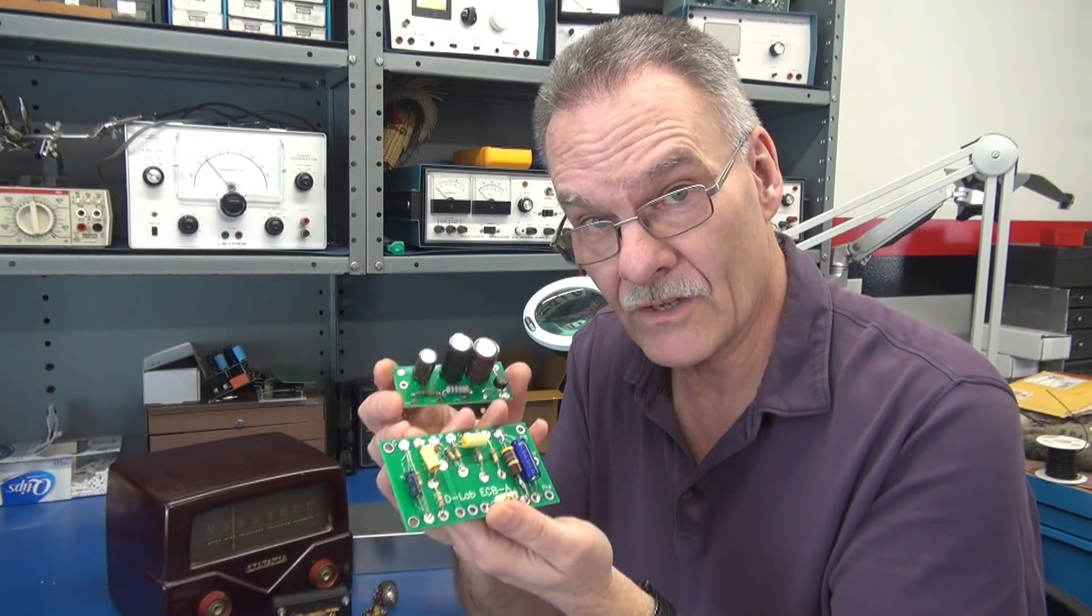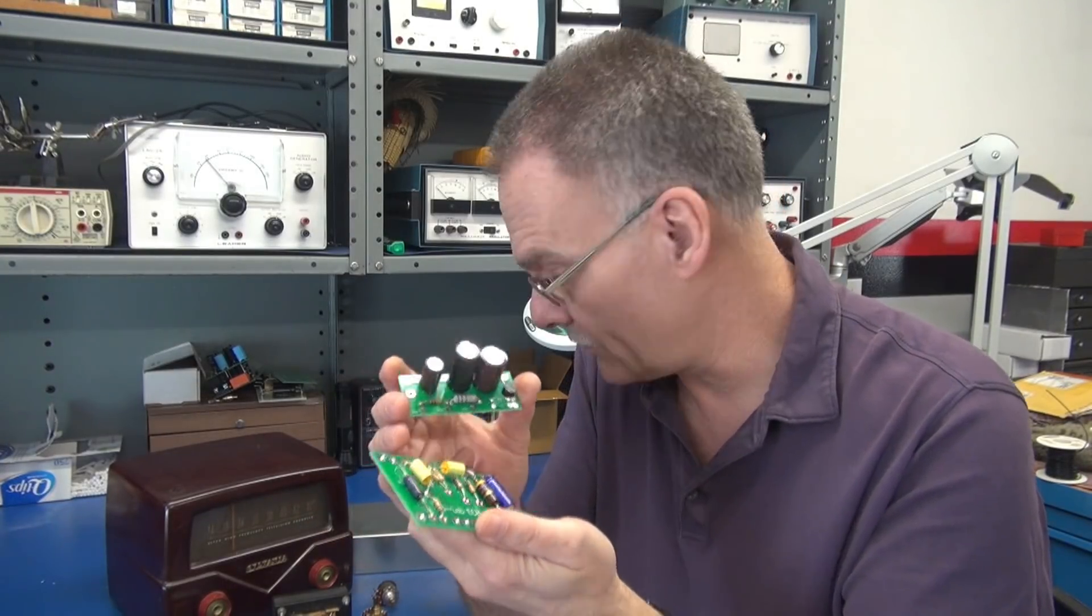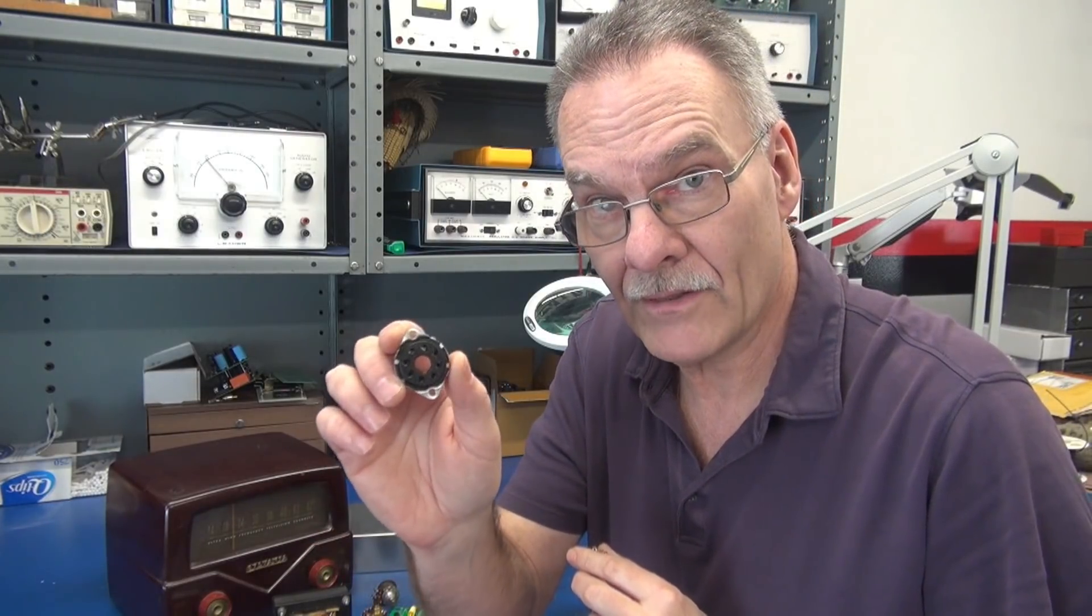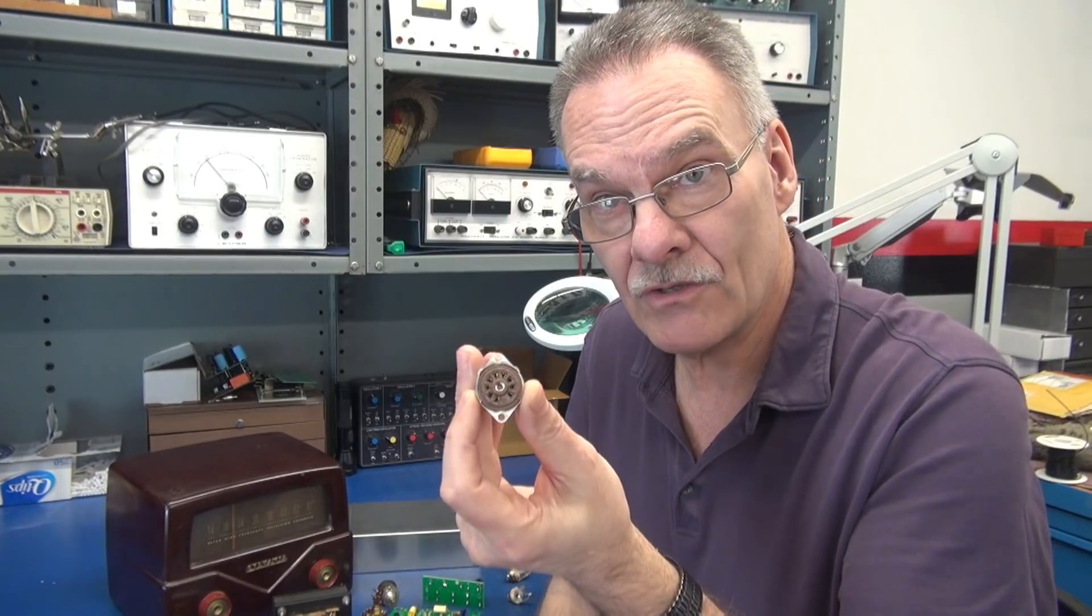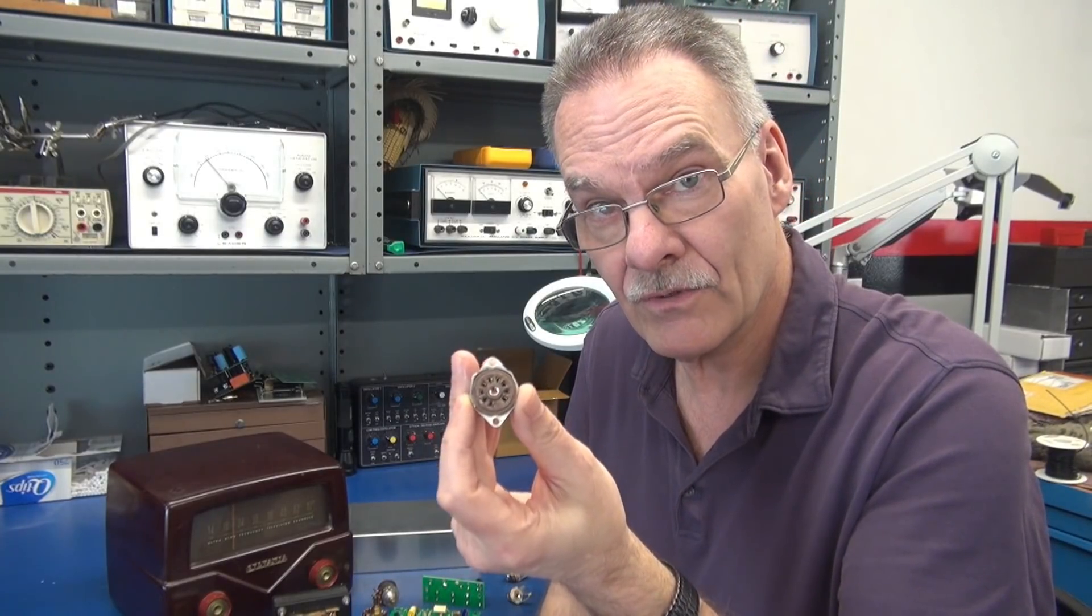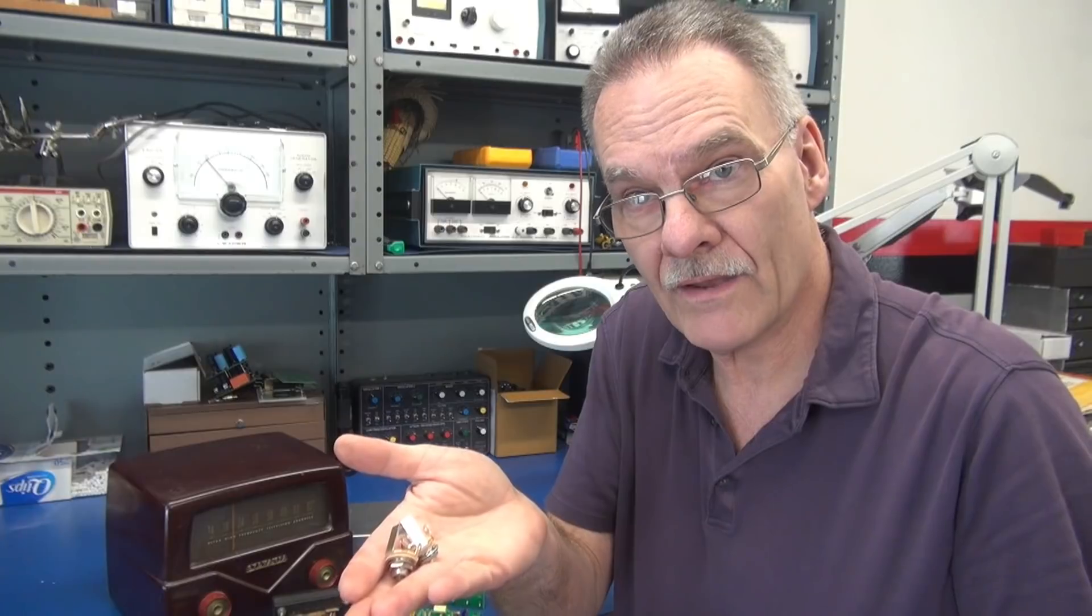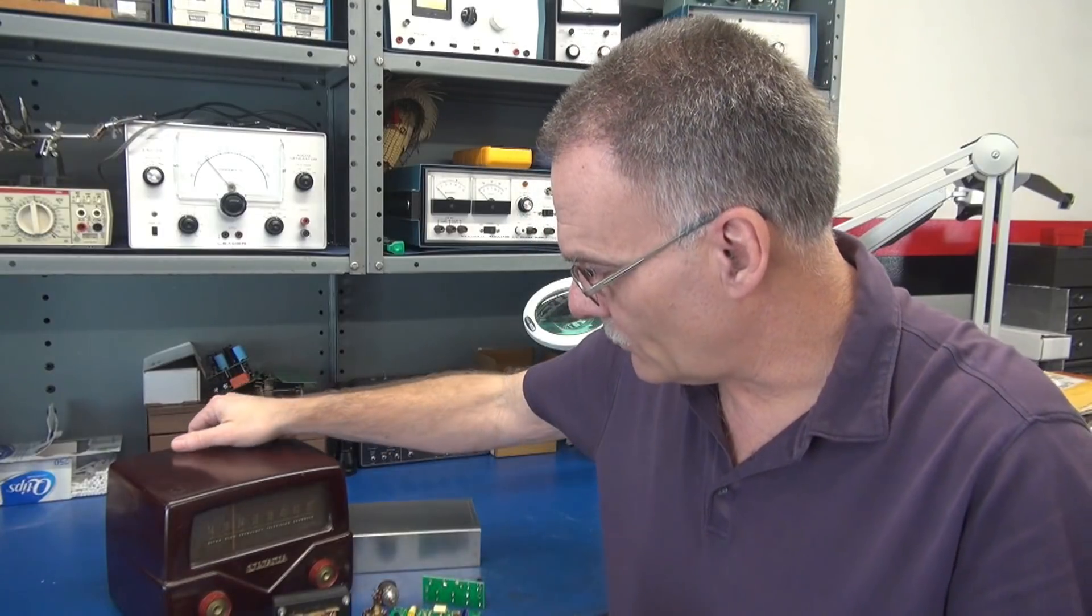Tube sockets for the build are also vintage. This is an octal bakelite type socket for the 6V6 and a Cinch 9-pin socket for the 12AX7. We're going to use Switchcraft jacks, all top quality stuff, some of it fairly vintage.